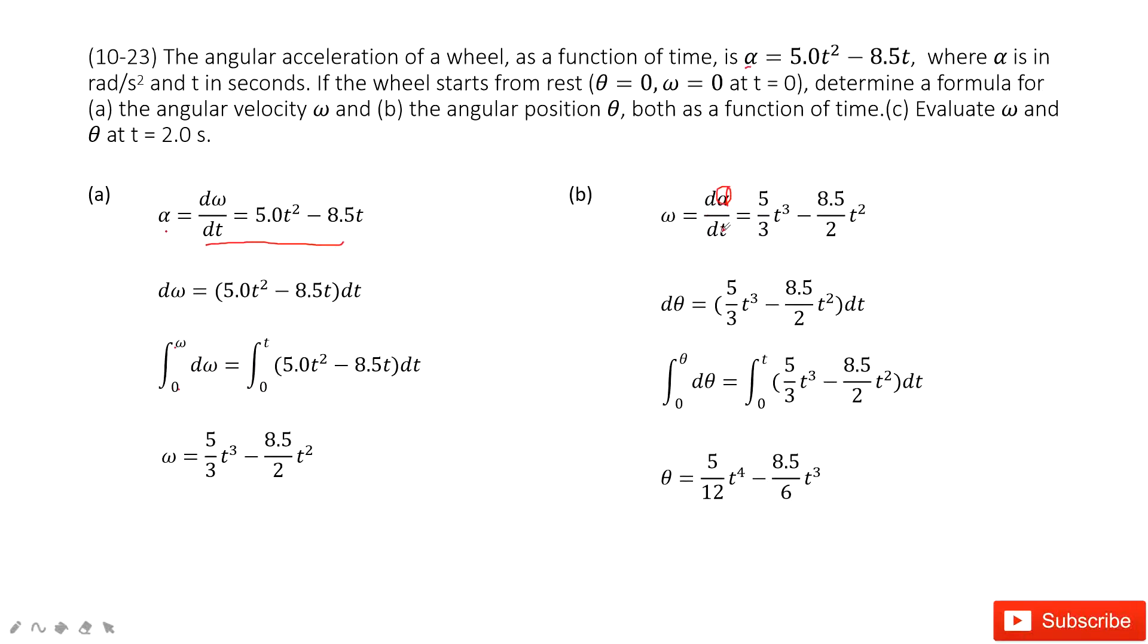d theta over dt. And then this function is given there. So we write it there. So we do the integral on both sides. At initial, theta is 0, final is theta. Initial t is 0, final is t. So we do the integral on both sides. We get the function, the angular position theta with time.